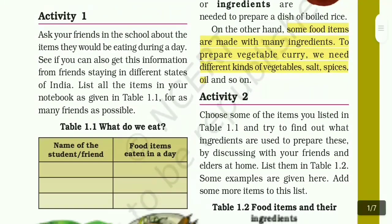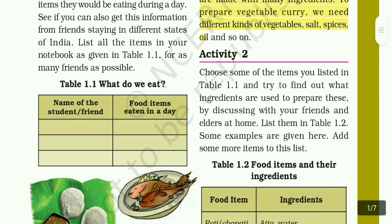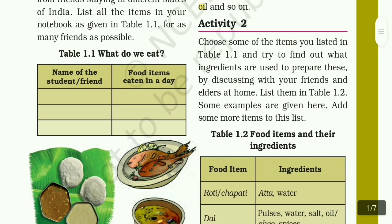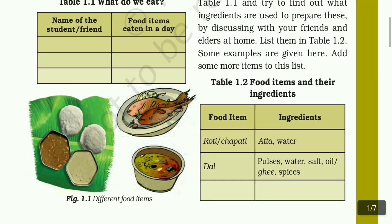Activity 2. Choose some of the items you listed in table 1.1 and try to find out what ingredients are used to prepare these, by discussing with your friends and elders at home. List them in table 1.2. Some examples are given here. Add some more items to this list. For example, table 1.1 includes the name of the student or friend, then you collect the ingredients: flour, water, salt.